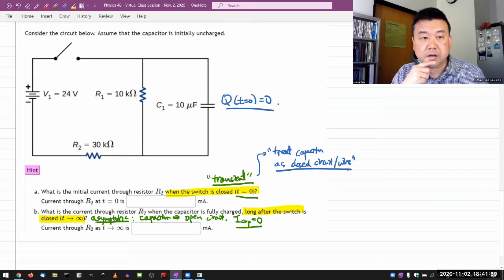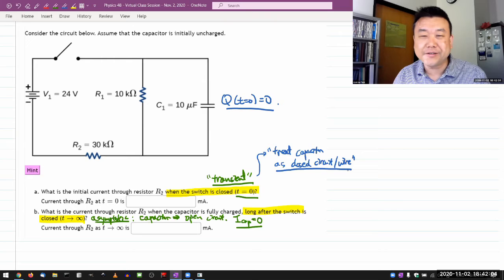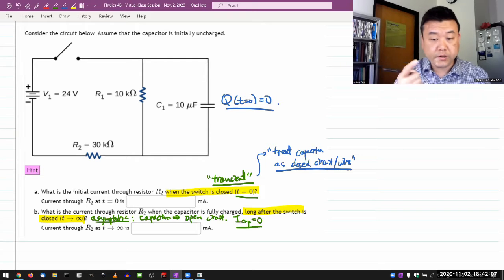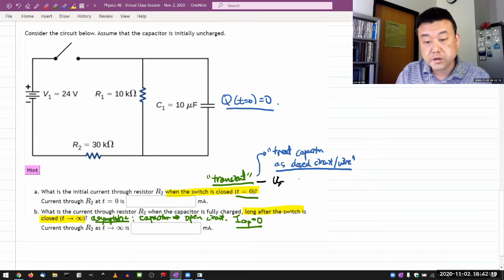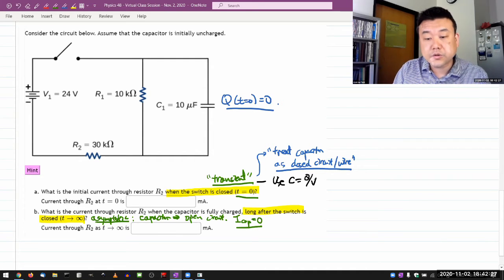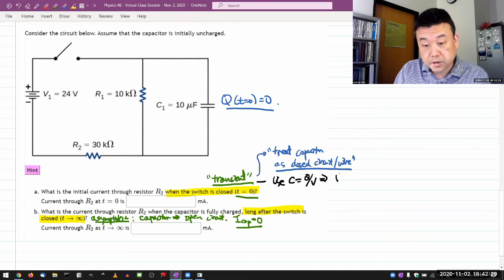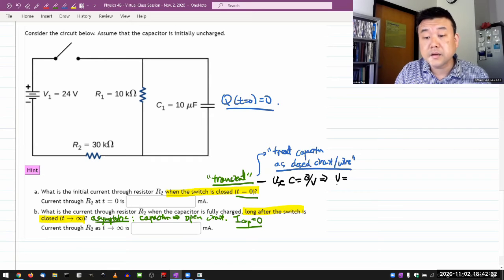But I think I would be treating you better if I give you the more general rule, of which this is a special case. The more general rule is that you use this. You use the definition of capacitance. So, use the definition of capacitance, which says capacitance is Q over V, or turn it around, it gives you the voltage across the capacitor as Q over C.